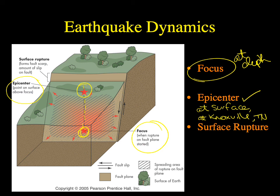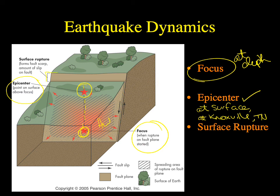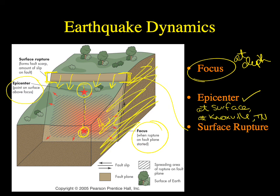Many times when a large earthquake occurs, we can see evidence at the Earth's surface showing which block moved. Using the stick-person method, we can identify the foot wall and hanging wall. We're not always able to see inside the Earth, so instead we look for a surface rupture — where the hanging wall block slides down and exposes part of the foot wall block. By identifying the surface rupture, we can determine the foot wall, hanging wall, and what type of fault movement occurred.